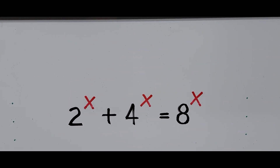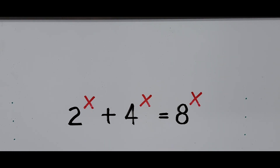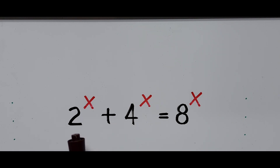Each term involves exponentials with variable x. The best way to solve this kind of equation is to reduce the number of terms involving exponentials with variables — from three terms to just two terms. To achieve this goal, all we have to do is divide the whole equation by any of the three terms. It can be divided by 2^x, 4^x, or 8^x.